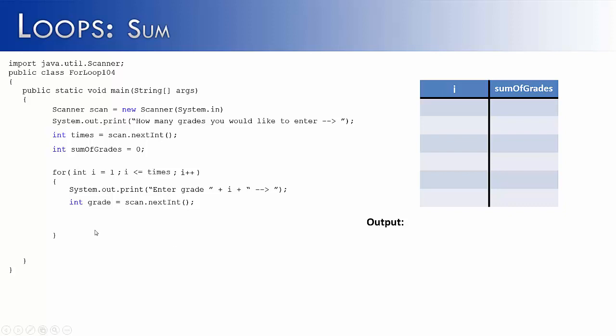Then notice I have initialized a value inside of the loop called grade. Notice this is initialized out here, and this is initialized in here. This can change every time the loop iterates. We do not want this to be set back to zero every time the loop iterates. That's why this is outside the loop, and that's why this is inside the loop.